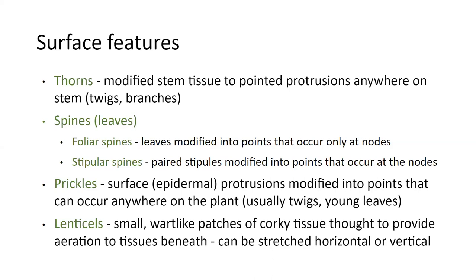We also have examples of stipular spines — the example from our first week was Robinia pseudoacacia. Those are paired stipules modified into points that occur at the nodes, so you'll see pairs of those on Robinia. We also have prickles — surface epidermal protrusions modified into points. Prickles can occur anywhere on the plant; it's not modified stem or leaf tissue but is in the epidermis, so they can be on twigs and also on young leaves.